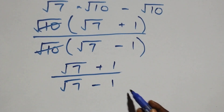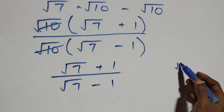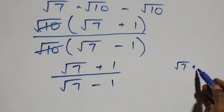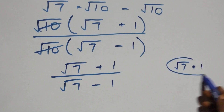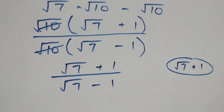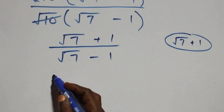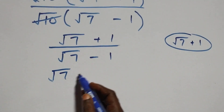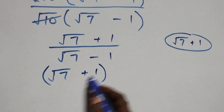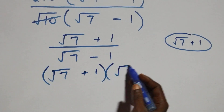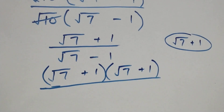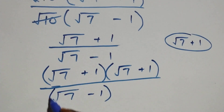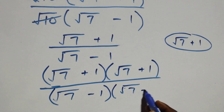The conjugate of the denominator (√7 − 1) is (√7 + 1) — only the sign changes. We multiply both numerator and denominator by (√7 + 1). This becomes (√7 + 1) times (√7 + 1), divided by (√7 − 1) times (√7 + 1).